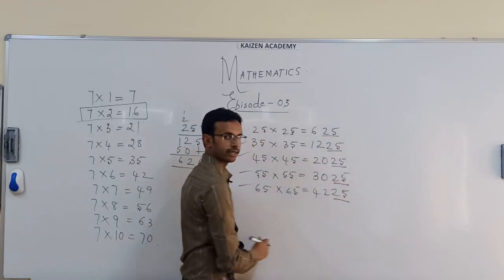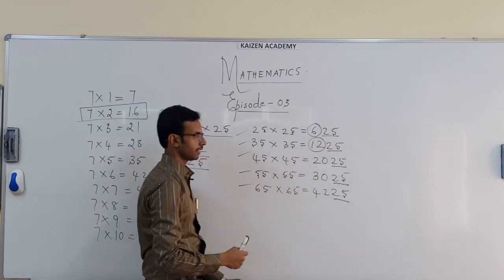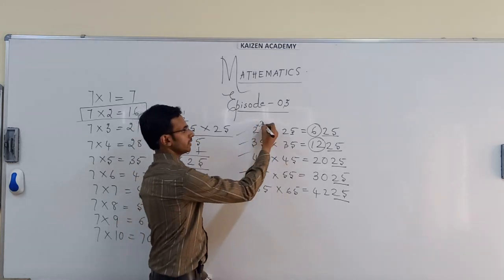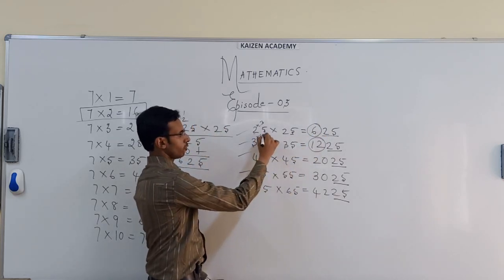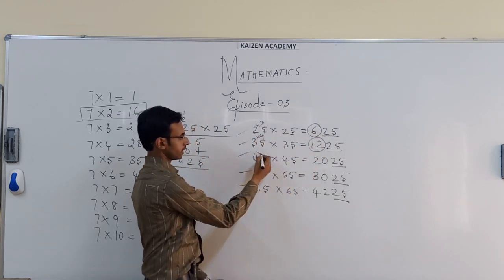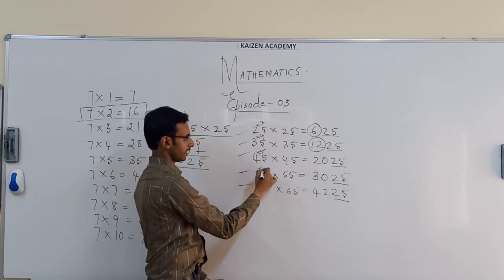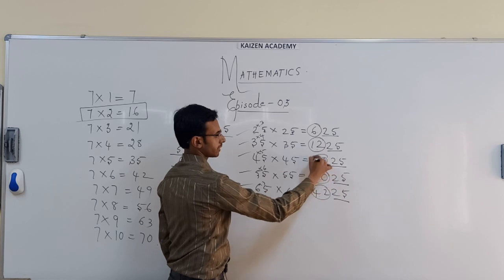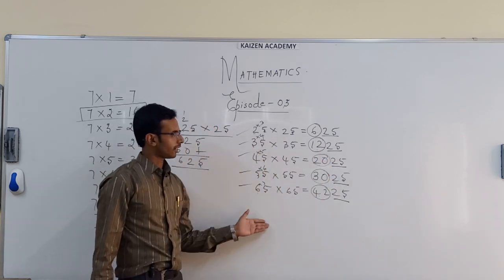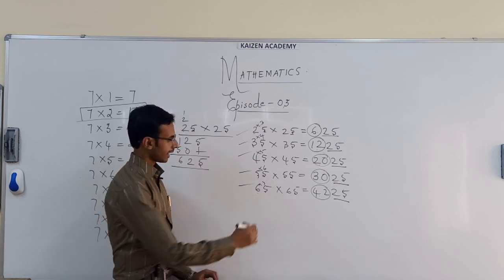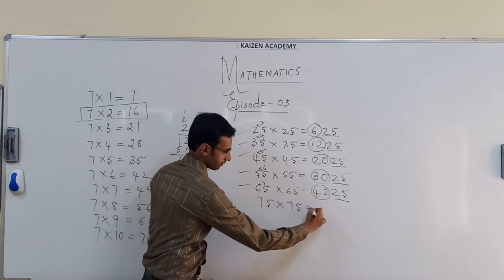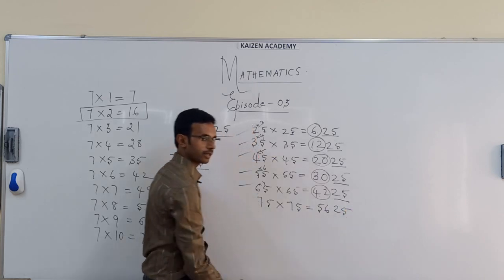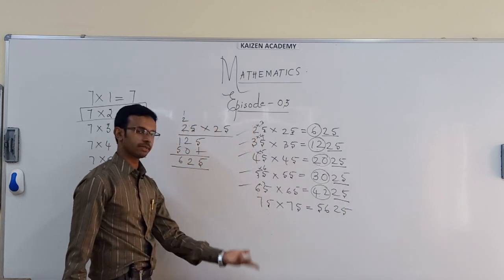How to get the leading digits is very simple: whatever the tens digit is, multiply it by the next consecutive number. 2 threes are 6 — so 25×25 = 625. 3 fours are 12 — so 35×35 = 1225. 4 fives are 20 — so 45×45 = 2025. 5 sixes are 30 — so 55×55 = 3025. 6 sevens are 42 — so 65×65 = 4225. Now can you determine 75 into 75? Next to 7 is 8, so 7 eights are 56, and the last two digits are 25, giving 5625.